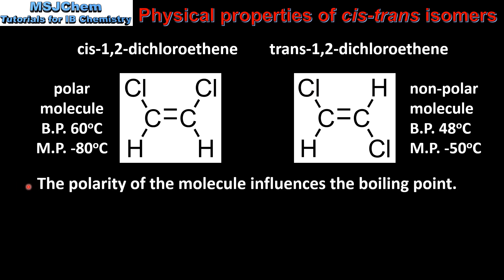The polarity of the molecule influences the boiling point. The cis isomer has dipole-dipole attractions between molecules, whereas the trans isomer has van der Waals forces between molecules. Because dipole-dipole attractions are stronger than van der Waals forces, the cis isomer has the higher boiling point.